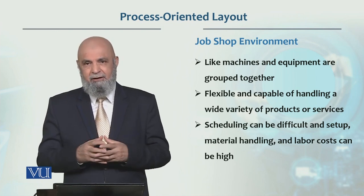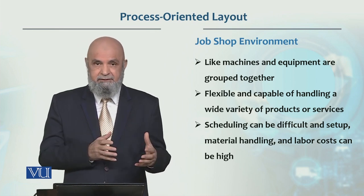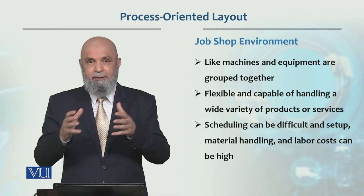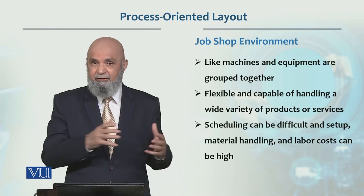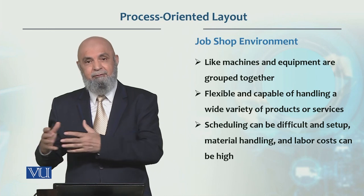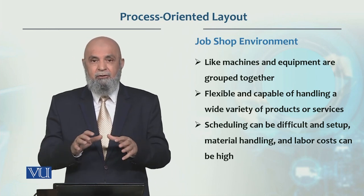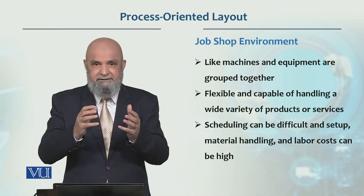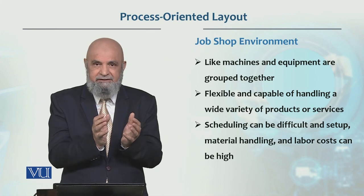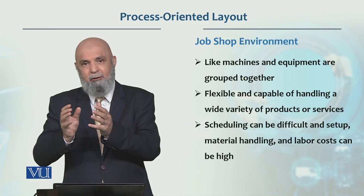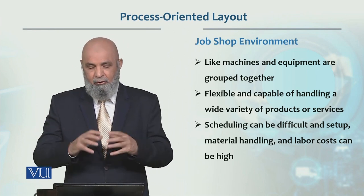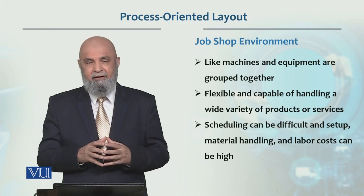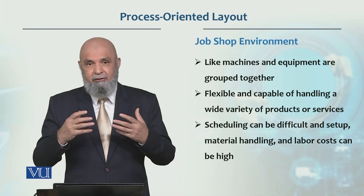A good example of this kind of layout is a hospital. In hospitals, operation theaters are in one place, emergency room is in one place, ICU is in one place — ICU beds are together, cardiac care unit beds are together, pharmacy is in one place. So that is a type of process-oriented layout where the layout revolves around the process. It is highly flexible and many different products can pass through at one time, but volume is low.